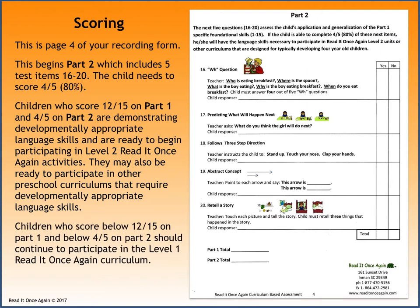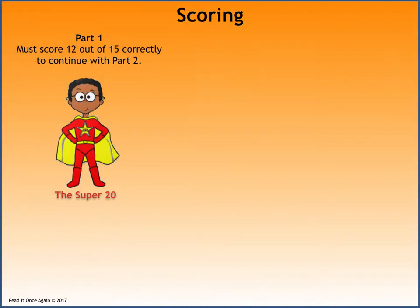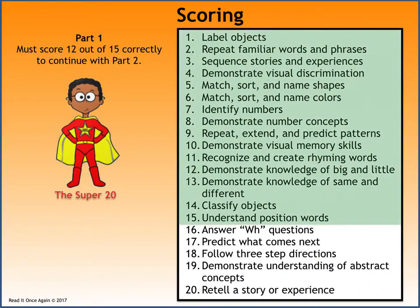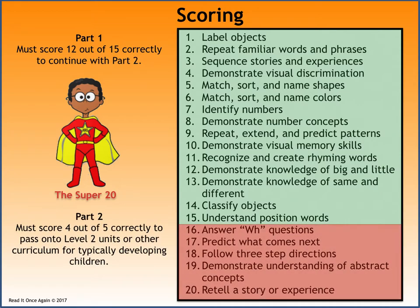Children who score below 12 out of 15 on Part 1 and below 4 out of 5 on Part 2 should continue to participate in the Level 1 Read It Once Again curriculum. Part 1 skills 1 through 15 are found inside the green box. They must score 12 out of 15 correctly to continue with Part 2. Part 2 skills are found in the red box. They must score 4 out of 5 correctly to pass on to the Read It Once Again Level 2 units or other curriculums designed for typically developing children.